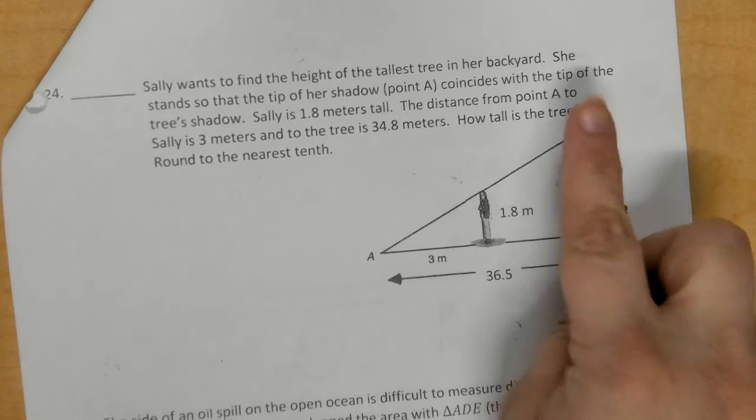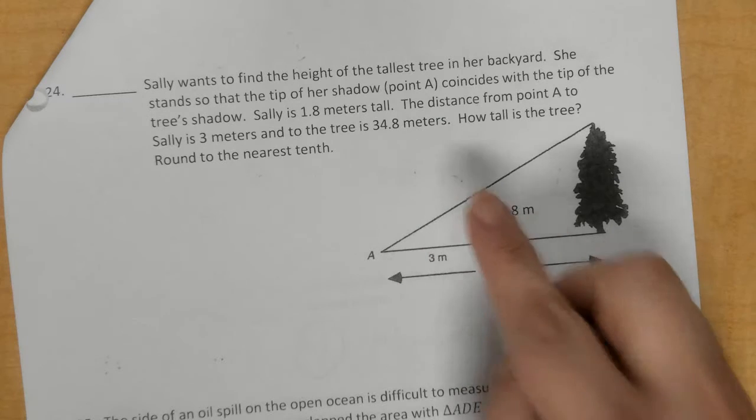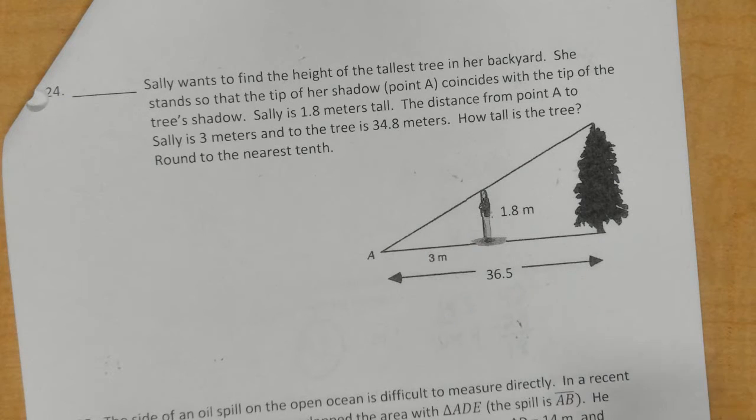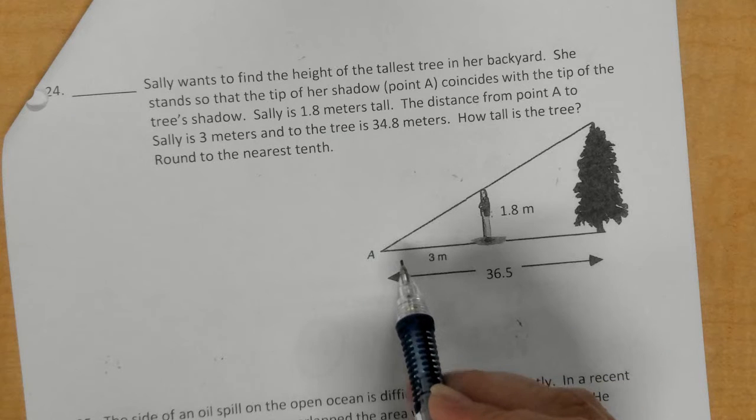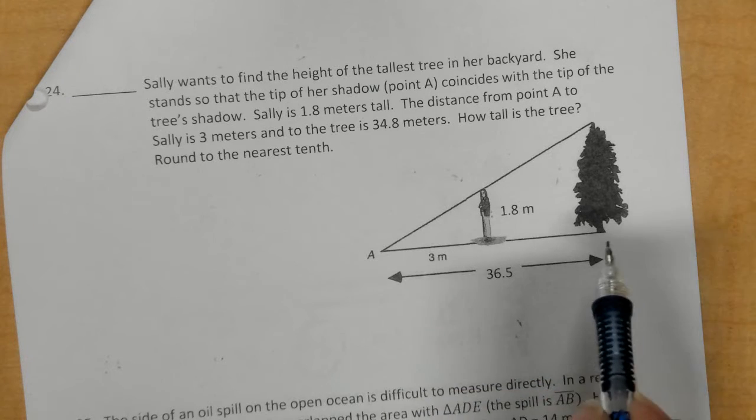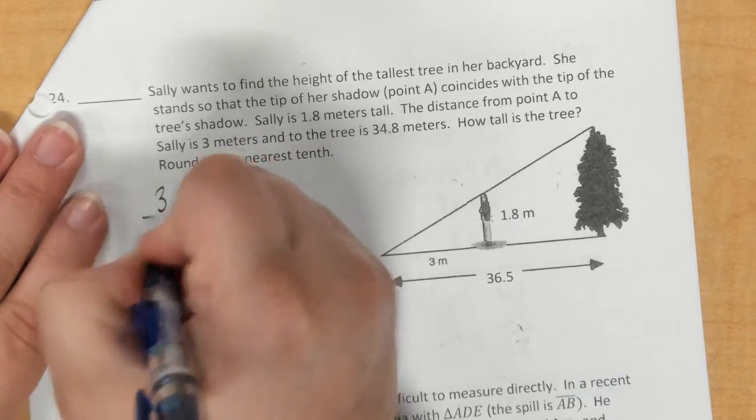So, you're supposed to be able to see that there's the big triangle in here, and then there's this little triangle right here. And so, we want to set up corresponding parts. So, the 3, which is this small, or this leg of the triangle here, you want to compare it to this leg of the triangle. So, I would say 3 over 36.5.